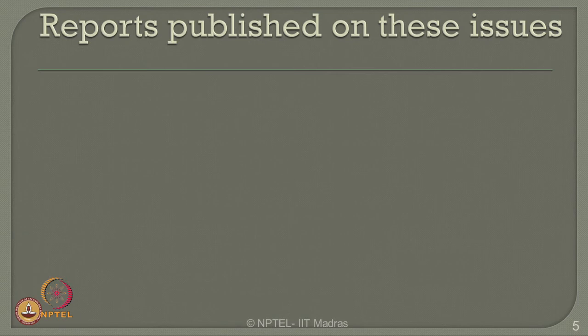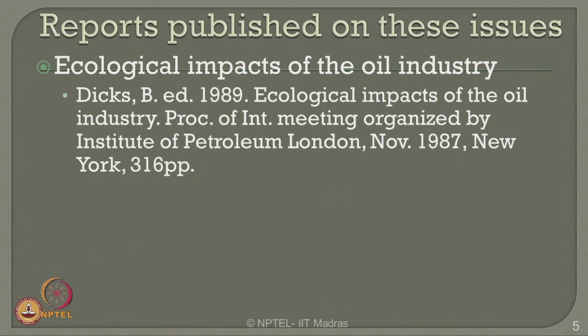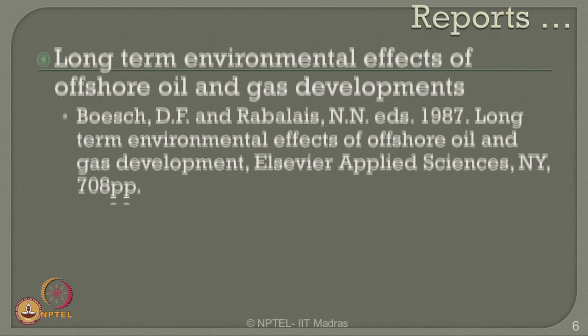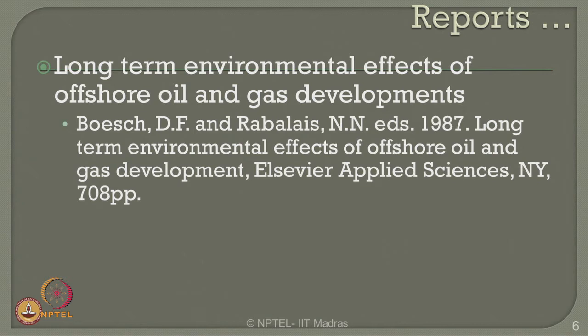Ecological impacts of oil industry can be seen from various published authentic reports. Dix (1989) published ecological impacts of oil industry from proceedings of an international meeting organized by the Institute of Petroleum London in November 1987. The North Sea and Environment was a special report edited by Keynes in 1992. Bosch and Rabelis in 1987 published a report on long-term environmental effects of offshore oil and gas developments, published by Elsevier Applied Sciences Newark.